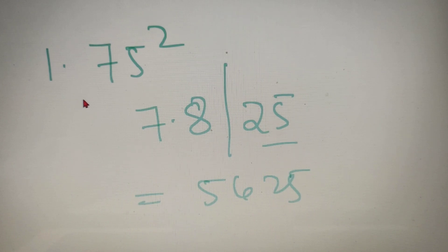Now you can see that this method is very simple and you can find the square of any number ending in 5 within seconds by using this method.